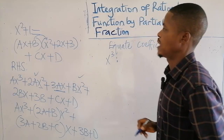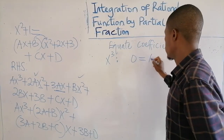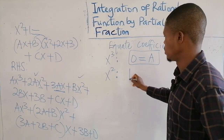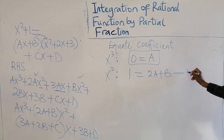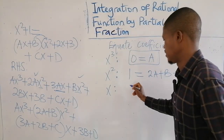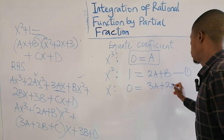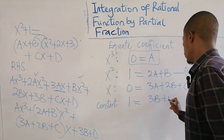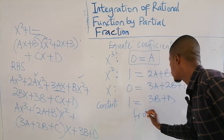Now we equate the coefficients. Coefficient of x cubed: on the left we don't have x cubed, so 0 = a. For x squared, the coefficient on the left is 1, and on the right is 2a plus b — call this equation 1. Coefficient of x: on the left it's 0, equal to 3a plus 2b plus c — equation 2. The constant: 1 = 3b plus d — equation 3.